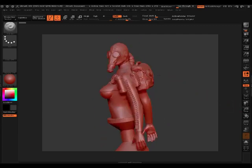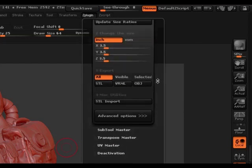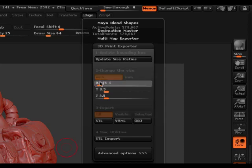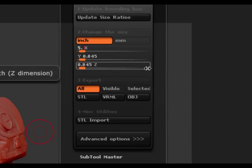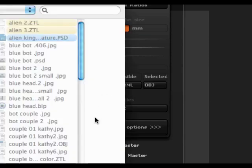So once your Z tool is done, you go to Z plugin, 3D printer, export. And I've been printing these at 5.5 as the size. Clicked STL, and that allows me to export it as an STL file.